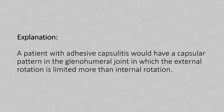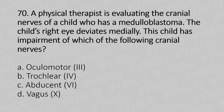Now move to our 70th question. A physical therapist is evaluating the cranial nerves of a child who has medulloblastoma. The child's right eye deviates medially. This child has impairment of which of the following cranial nerves? Option A: oculomotor — that's the third. Option B: trochlear — that's the fourth. Option C: abducent — that's the sixth. Option D: vagus — that's the tenth. And the answer is Option C: abducent — that's the sixth.